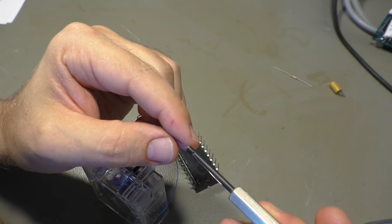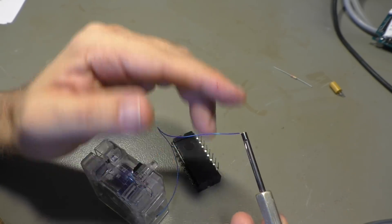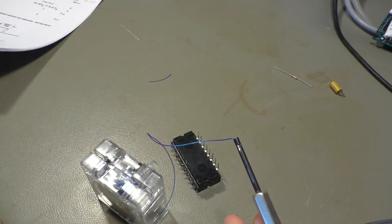Then you thread that wire into the smaller hole here until you can see it here, like so. And then we make our first connection.